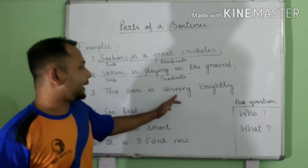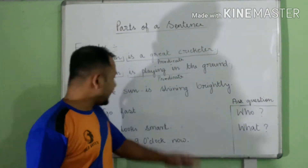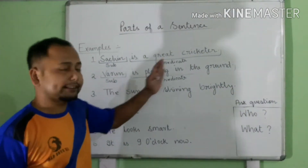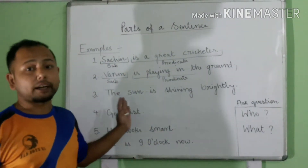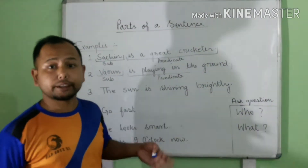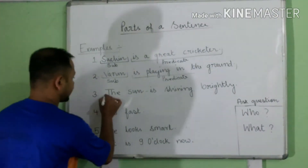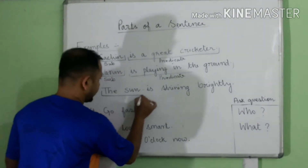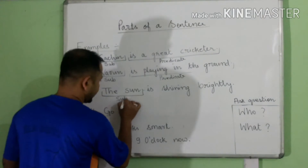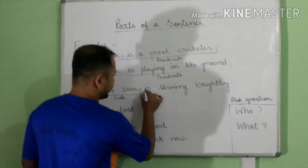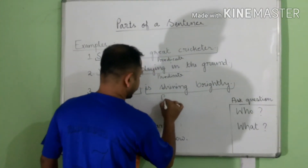Next example: The sun is shining brightly. We ask the question: what is shining brightly? The sun. So the sun is the subject, and is shining brightly is the predicate.